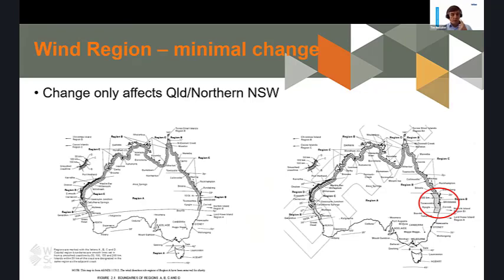Some changes to do with AS4055 in the latest version. The overarching wind region you're in is the starting point of all wind classification calculations — are you in the majority of the country in Region A, or on the fringes around Regions B, C and D? The major change is that Region B around Brisbane has been deepened inland — instead of a 100 kilometre limit it now extends further, still between 25 and 30 degrees latitude but deeper into the country.